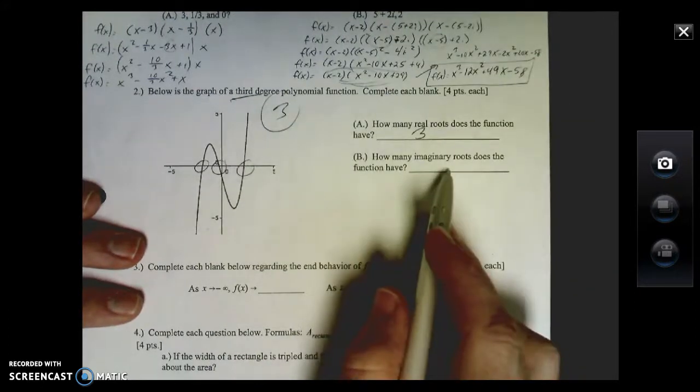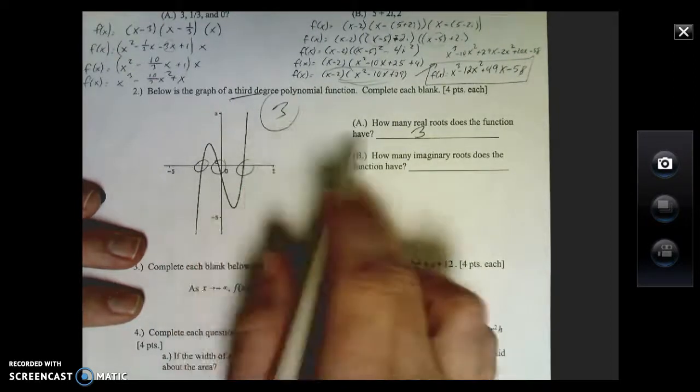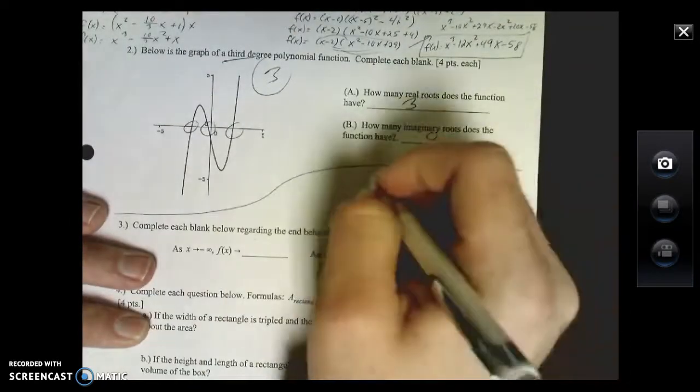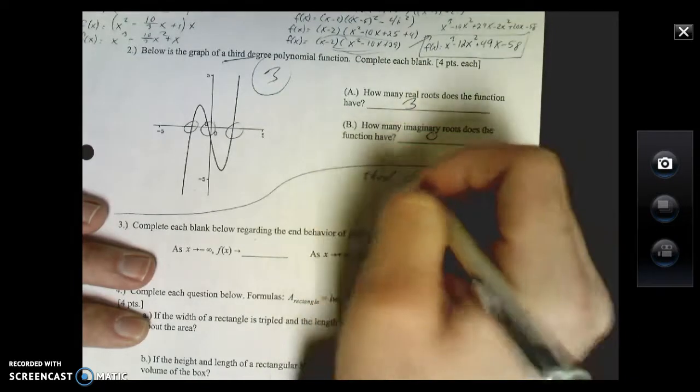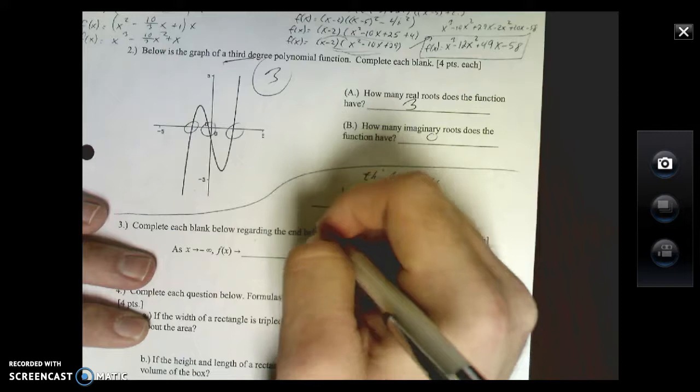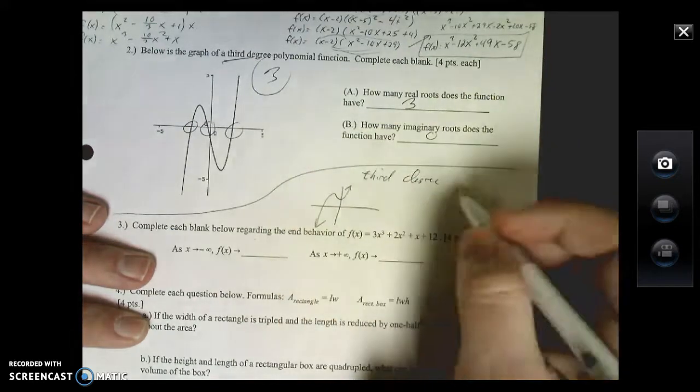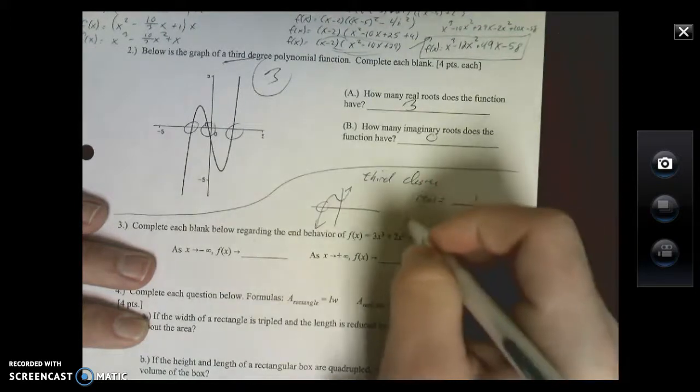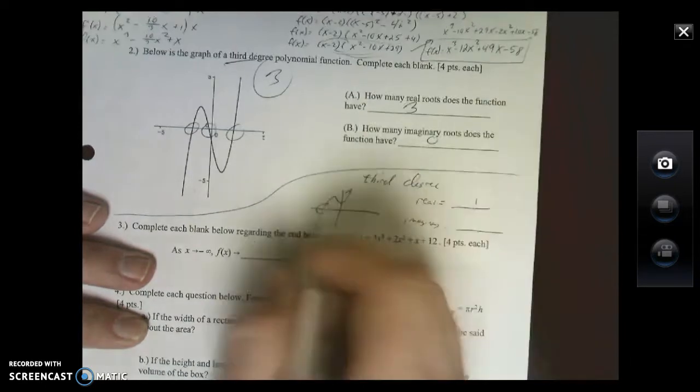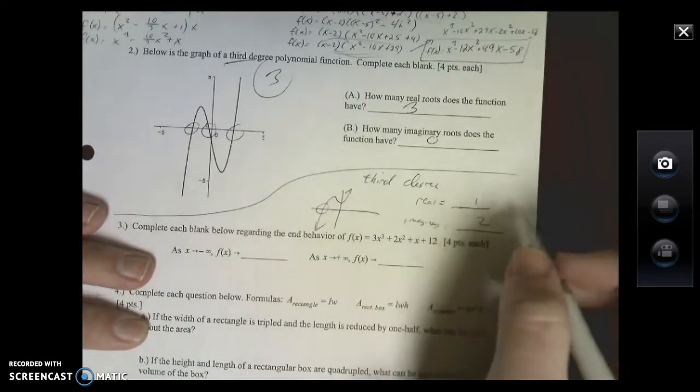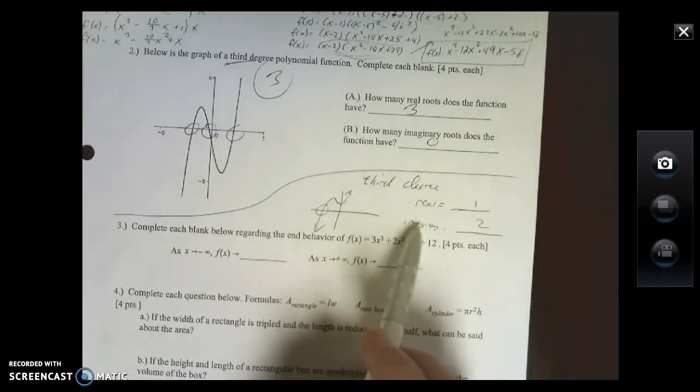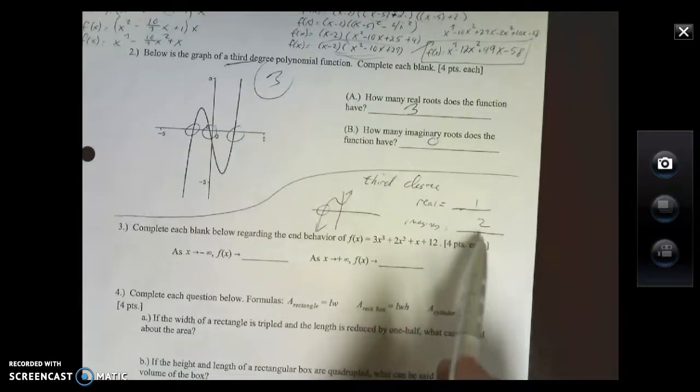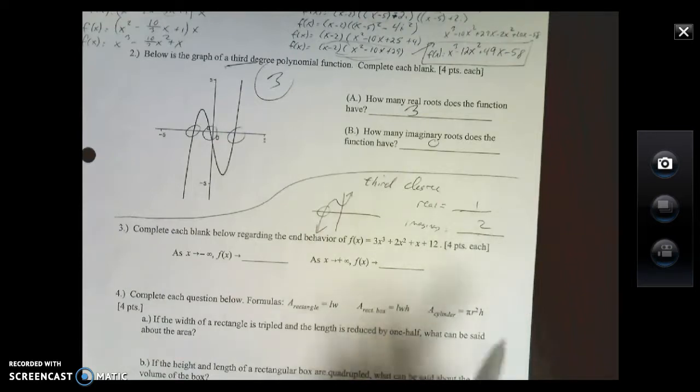Every time it hits the X-axis, that's a real solution, a real root. So how many real roots does this problem have? Three. How many imaginary does it have? Well these two numbers have to add up to the total amount, so since I already have three, this is just zero. A different example: if I said third degree and gave you this graph, how many reals does this one have? One. It only hits once. How many imaginary? Well you do three minus one, get two.